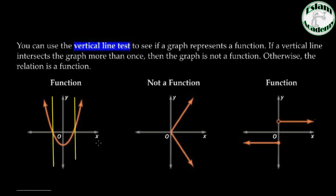So the first relation is a function because there is no vertical line intersecting at two points. But for the second one, we can draw a vertical line that intersects the graph at two points, so this relation is not a function.